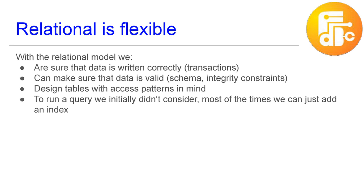The relational model is surely the most flexible. First of all, when you insert data and the database returns okay, the query succeeded, you are sure that the data is persisted — even if the server crashes, your data is there. Also, you typically design tables keeping in mind how you will use them. And if at some point you need to use them in a completely different way and run a query you didn't have in mind previously, most probably you can. Maybe you will have to add another index, but it will work and probably it will be fast.